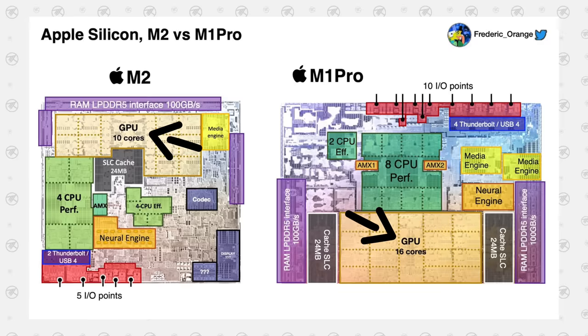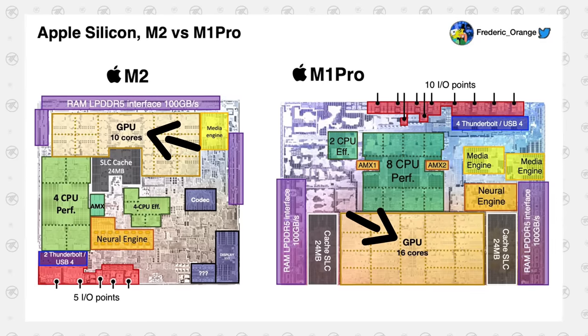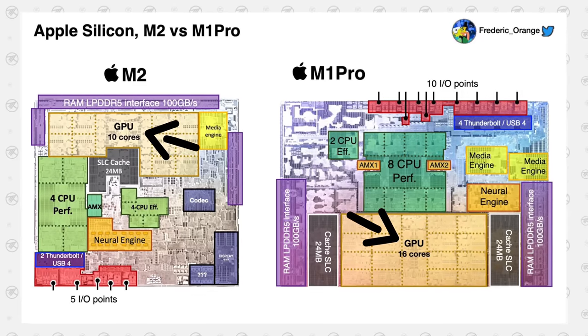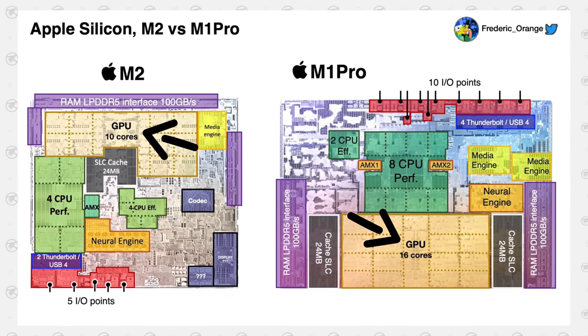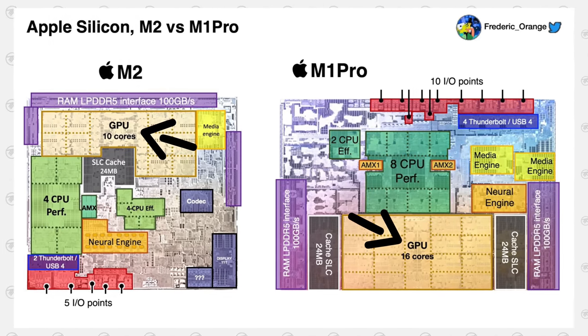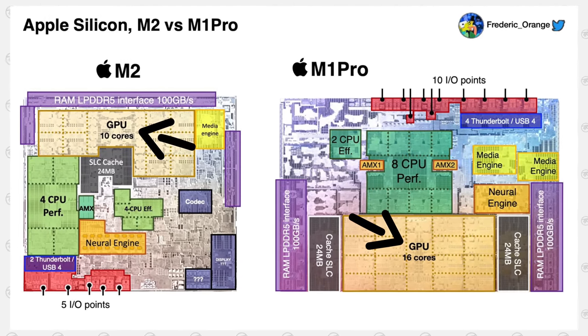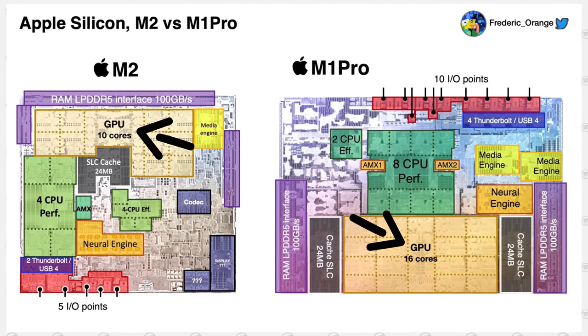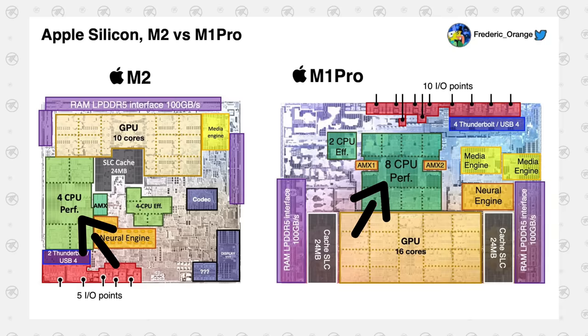Moving on, the M2's GPU only comes with up to 10 cores instead of 16 on the M1 Pro, which gives us a hint at the performance we should be expecting.